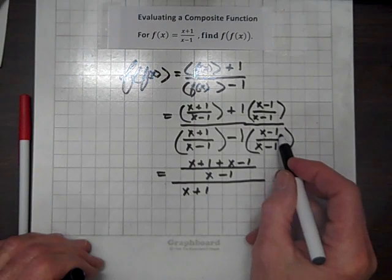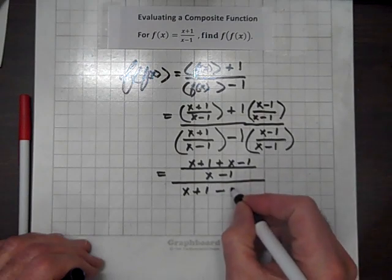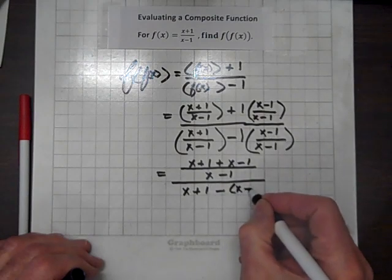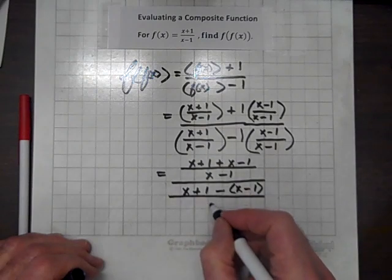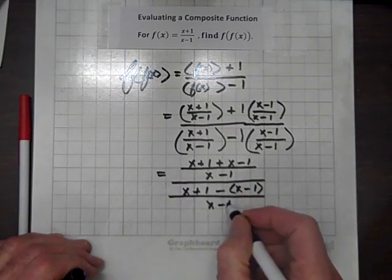But let's maintain these upper parentheses, and we get minus times x minus 1, and all over that common denominator of x minus 1.